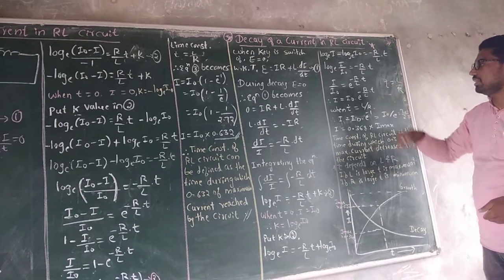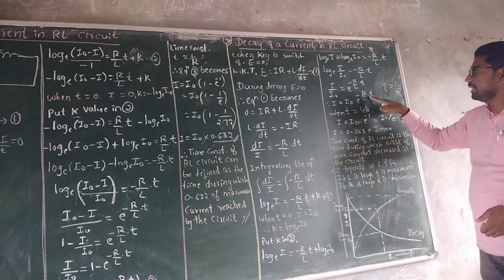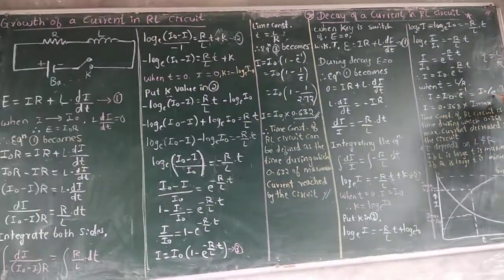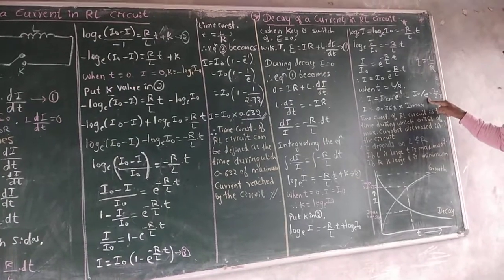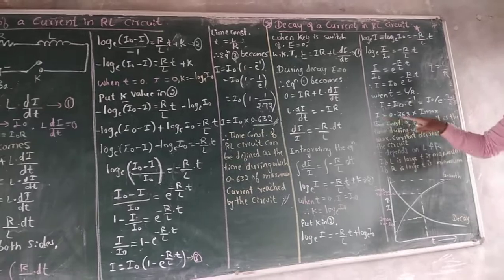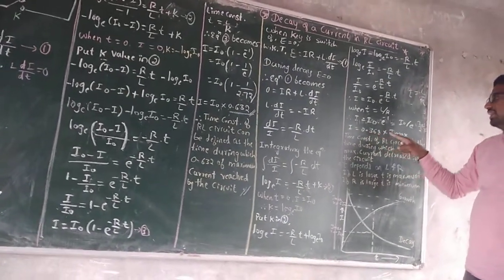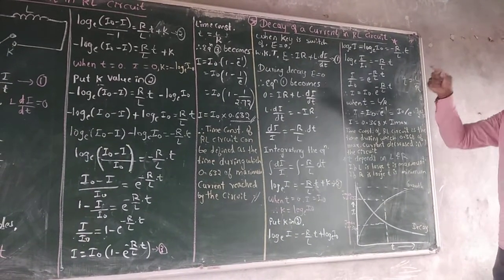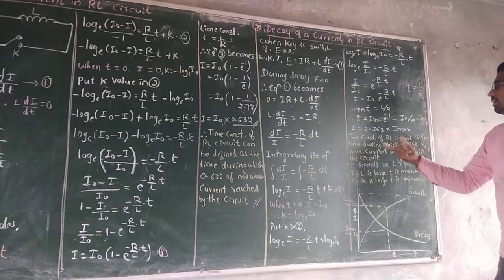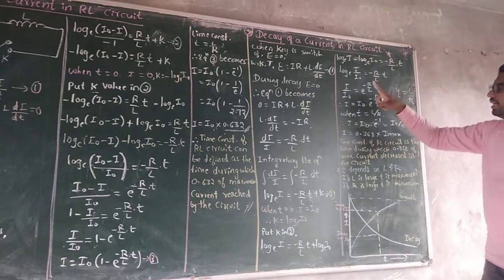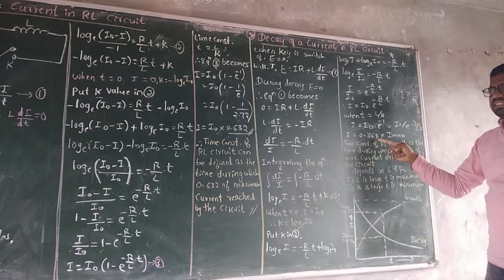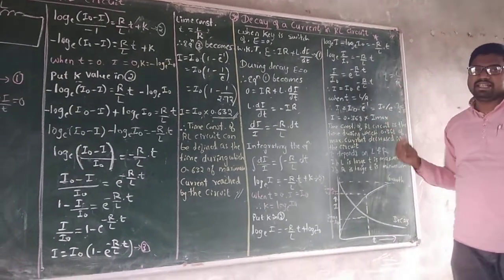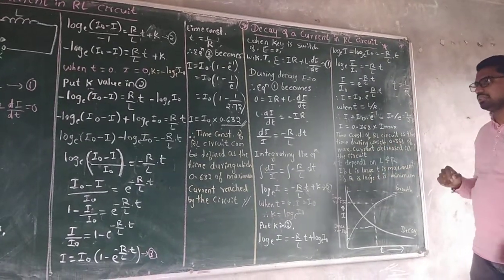Therefore I = 0.368 I₀, where I₀ is the maximum current. The time constant for the RL circuit during decay is the time during which the current decreases to 0.368 times the maximum current, because this is a decay process.